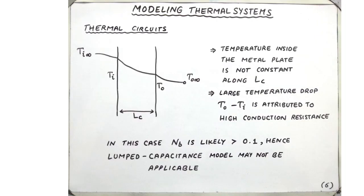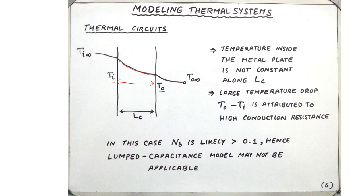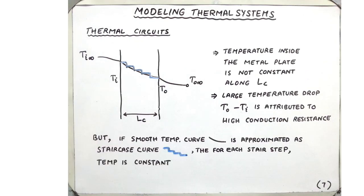In general, however, the lumped capacitance model assumption may not be valid because there might be a temperature drop inside the substance, with surface temperature Ti falling to T0 on the other surface. This temperature drop indicates a non-trivial conduction resistance. In this case, the Biot number is usually higher than 0.1. The question is how we can modify or utilize the lumped capacitance model to precisely describe such a thermal system.